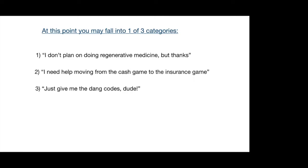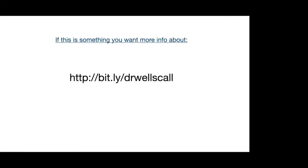I don't give out codes on training seminars like this, and let me explain why. If you knew how to use these codes properly, you would know how to research and find the code on your own. I don't want to throw up a code and say, here's the code for arthritis and amniotic tissue — bill that to insurance and Medicare and you'll be fine. That would be doing you a massive disservice and putting a lot of doctors at risk. If you want to get into regenerative medicine or move from the cash game into the insurance game, we have resources, legal help, billing help, and great vendors to help you through that process.